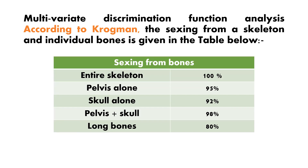Multi-variate discrimination functional analysis, according to Krogman, provides the accuracy of sexing from a skeleton and individual bones. Entire skeleton: 100%. Pelvis alone: 95%. Skull alone: 92%. Pelvis plus skull: 98%. Long bones: 80%. This analysis according to Krogman is very important.